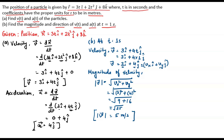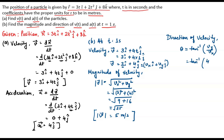Now next we find the direction of velocity. The direction of velocity is given by the formula theta equals tan inverse of Vy divided by Vx. Substituting the values, Vy is 4 and Vx is 3. After solving this we get theta equals 53 degrees with the x-axis. This is the value for direction of velocity.